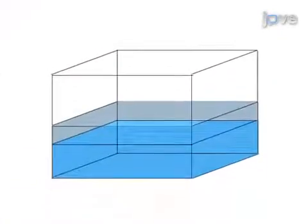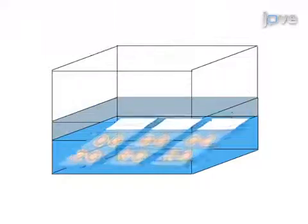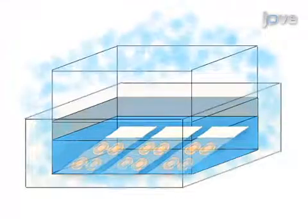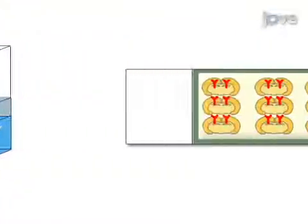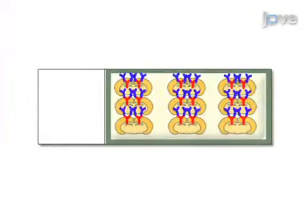The second step is to boil the slides of tissue in chaotropic treatment and to allow sufficient time for cooling. Next, stain the tissue overnight with primary antibodies.